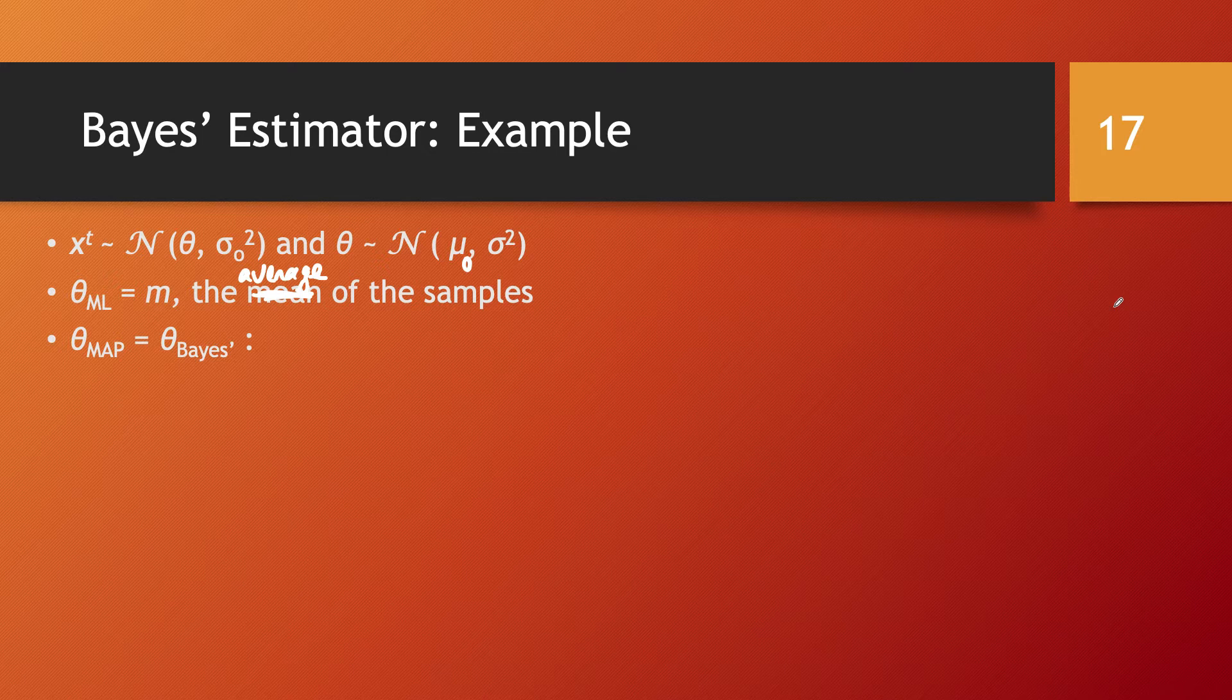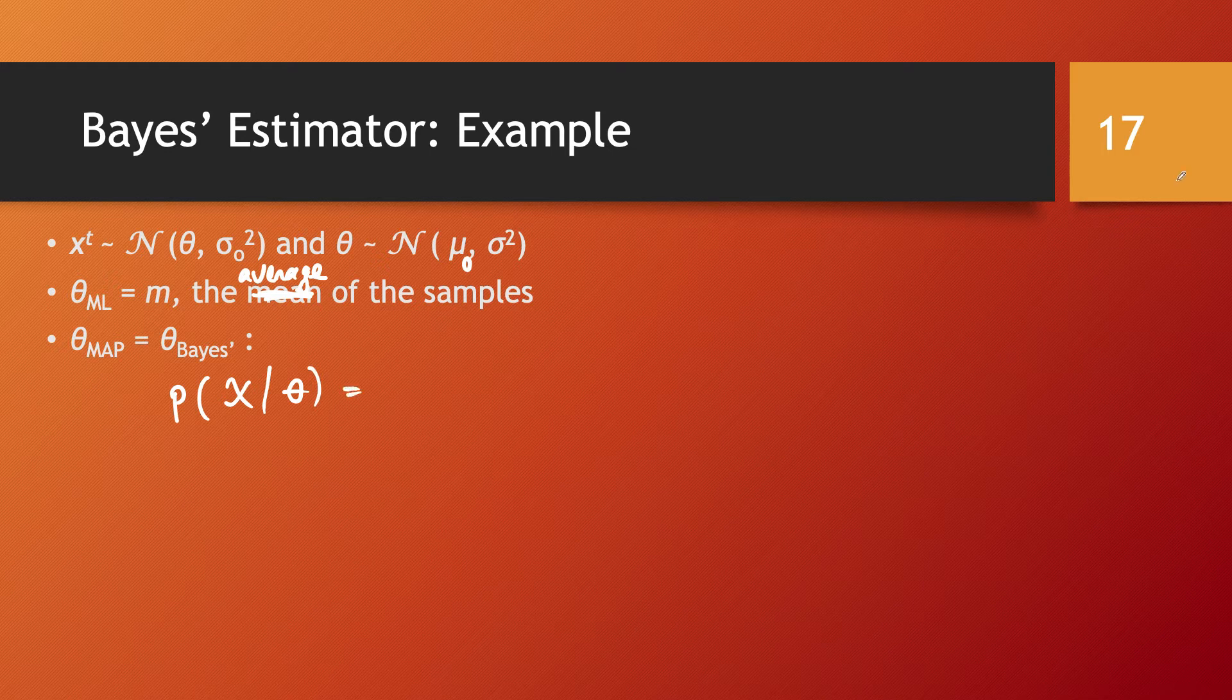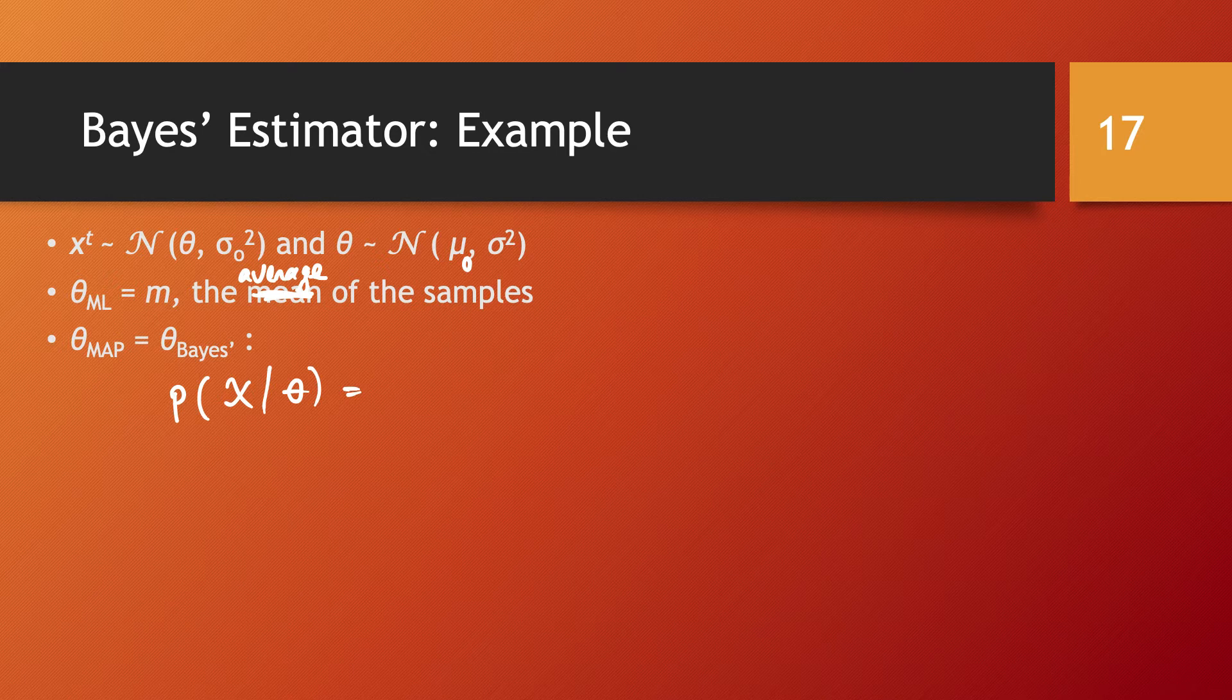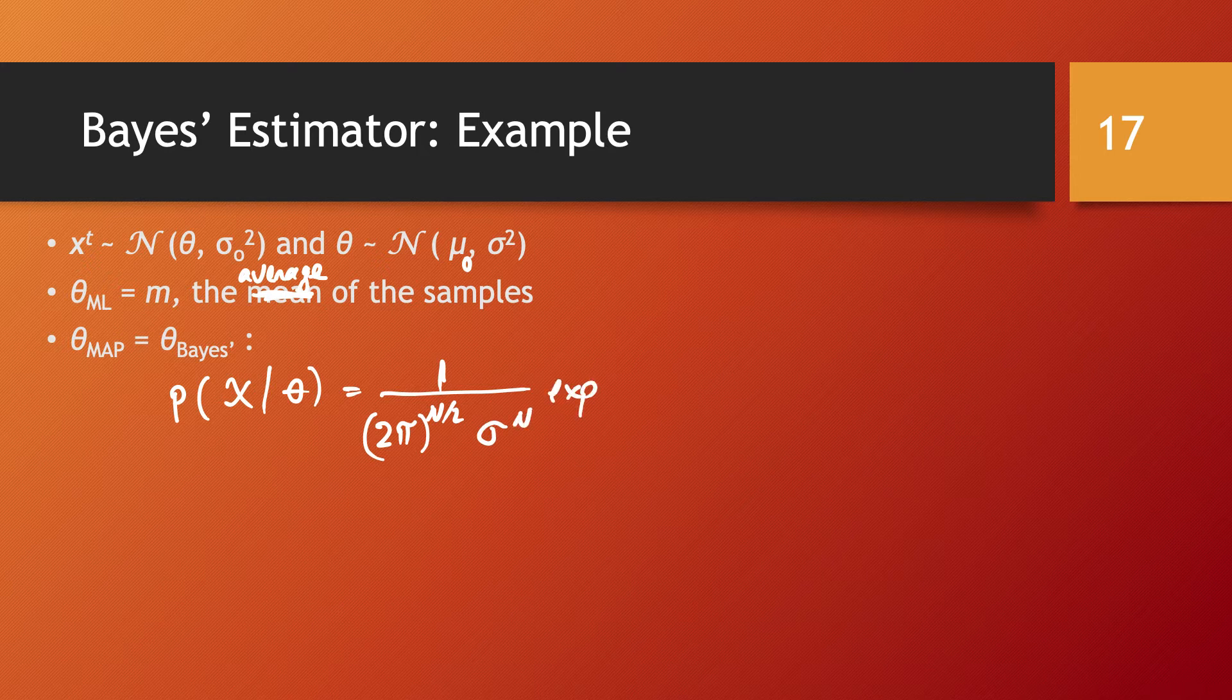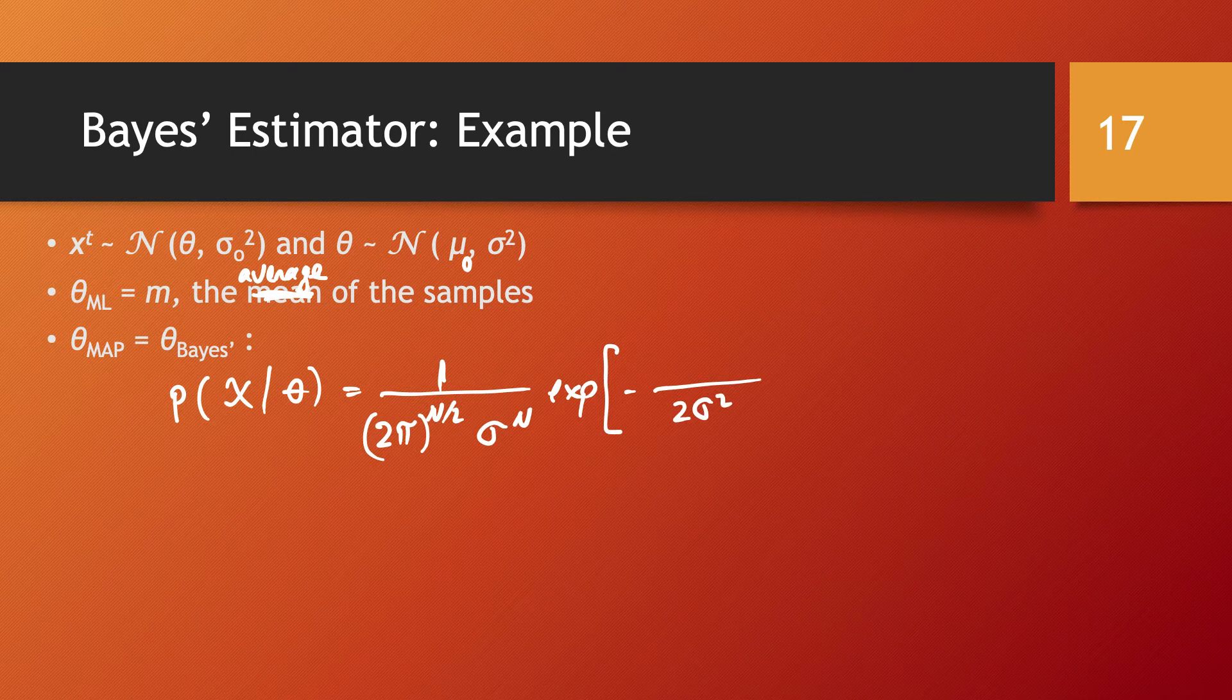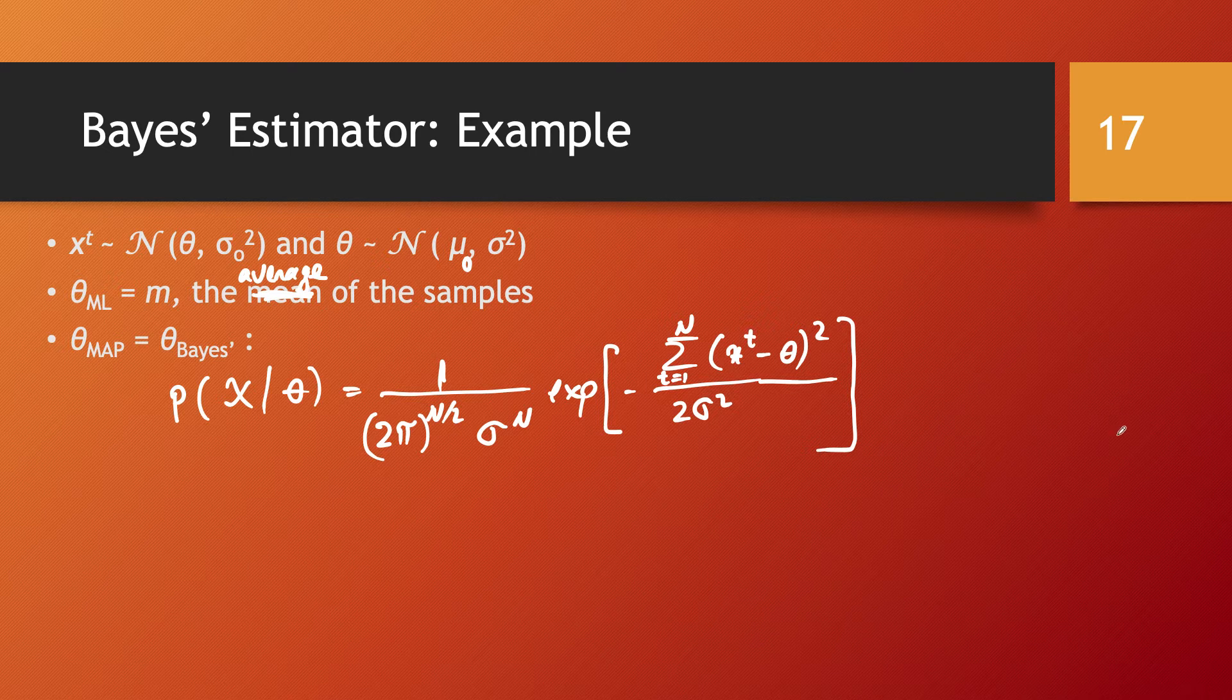But the way you think about this is going to be like this. So in our case, we have that the probability of sample x given theta is, because this is normally distributed, is going to be 1 over 2 pi to power n over 2 times sigma to power n times exponential of,